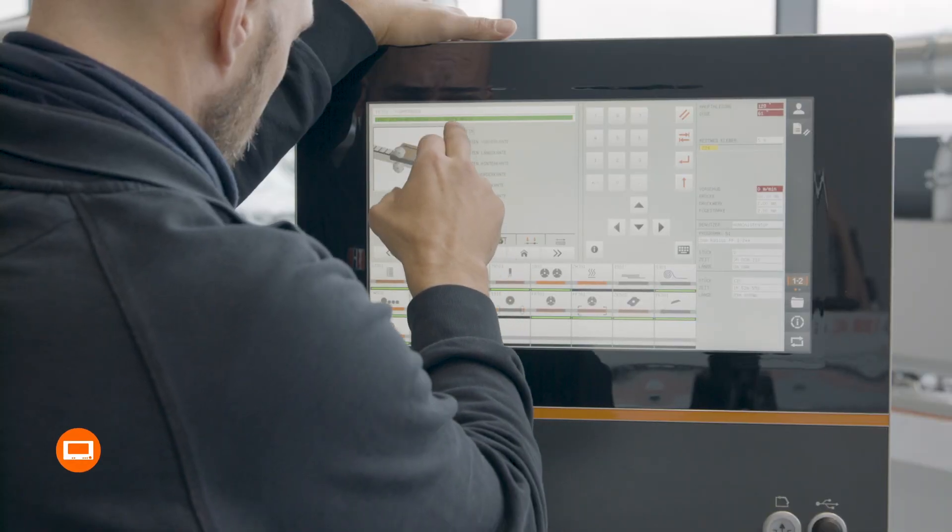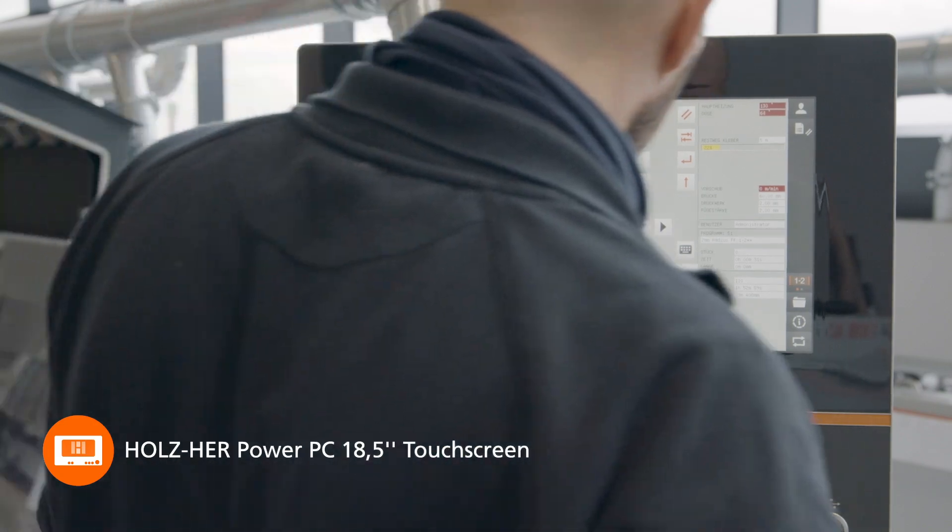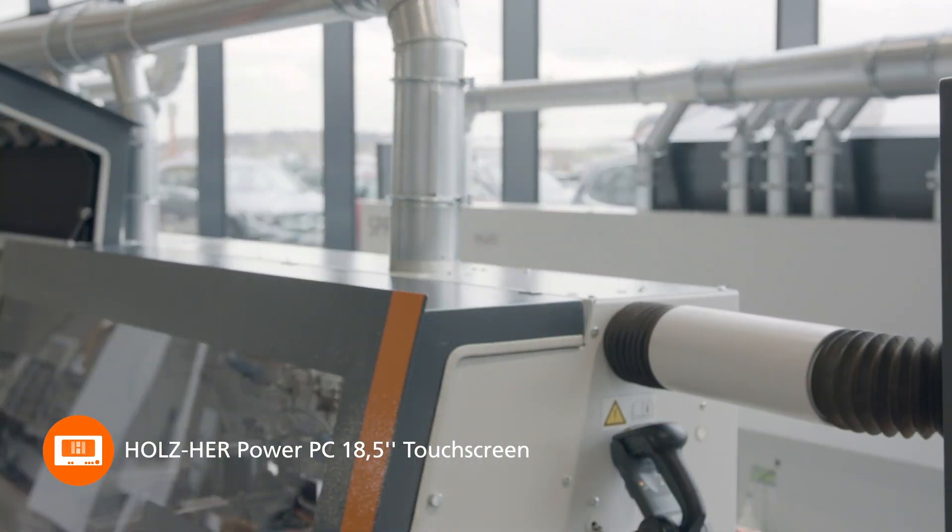The Auriga has a large 18.5 inch touch screen control panel. It can be rotated and swiveled to allow ergonomic operation in any position.